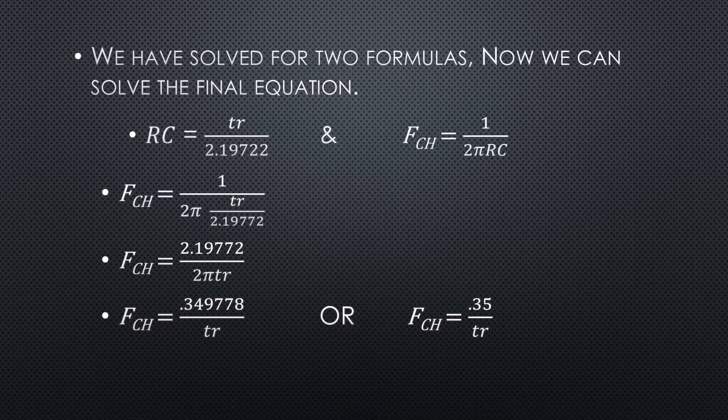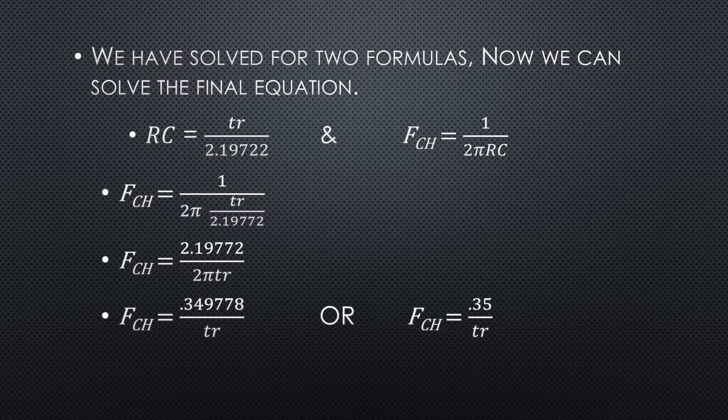We have solved for two formulas. Now we can solve the final equation. RC equals tr over 2.19722, and F_CH equals 1 over 2πRC.